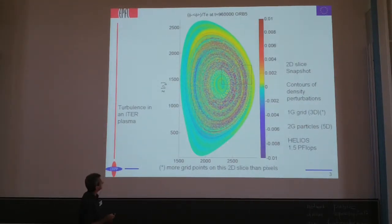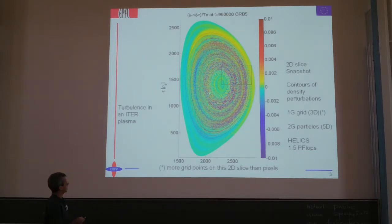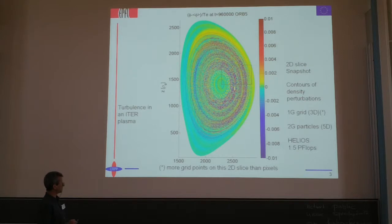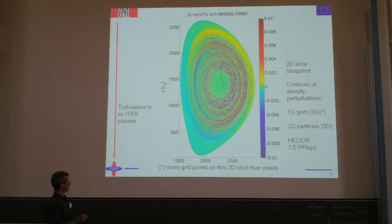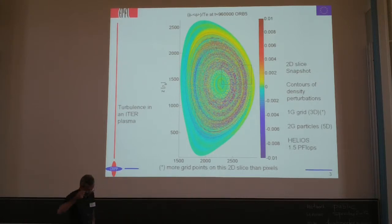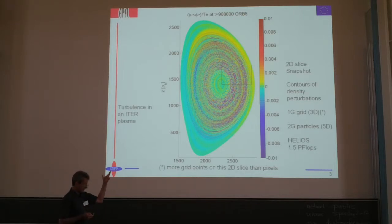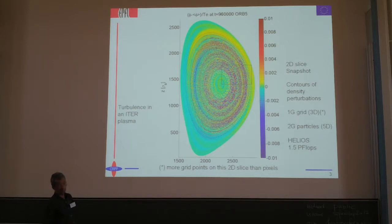Here is the beast — the beast is ITER, this machine. We have the very hot plasma in there, and this is just a 2D snapshot across a 3D field. This cross section has more grid points than pixels in the figure — one million grid points — but it's actually a three-dimensional grid which has one billion grid points. It's even worse than that because we are dealing with collisionless plasmas and have to deal with phase space: not only the three-dimensional real space configuration space, but two additional velocity space variables — a five-dimensional space.